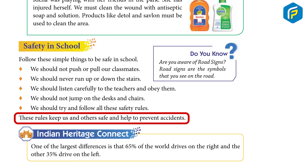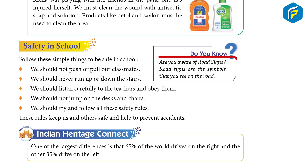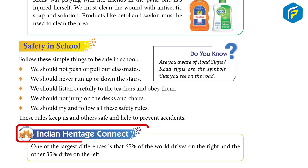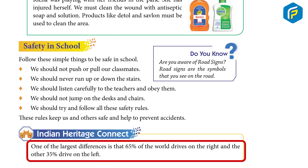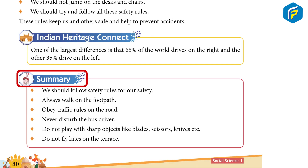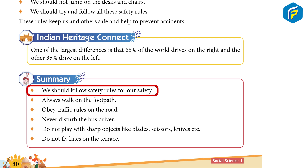Do you know about road signs? Road signs are the symbols that you see on the road. Indian heritage connect: One of the larger differences is that 65 percent of the world drives on the right and the other 35 percent drive on the left.